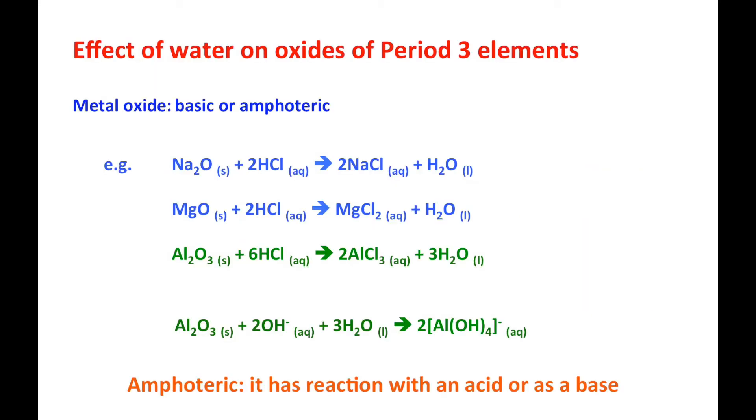Here it shows sodium oxide reacts to form sodium chloride, magnesium oxide reacts with HCl to form magnesium chloride, and aluminum oxide reacts to form aluminum chloride. But students should pay attention.